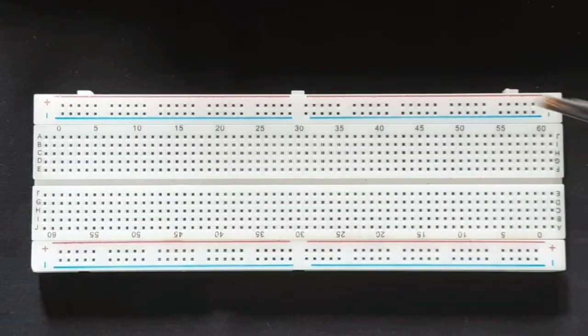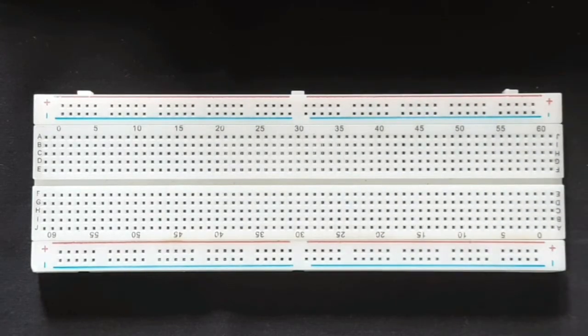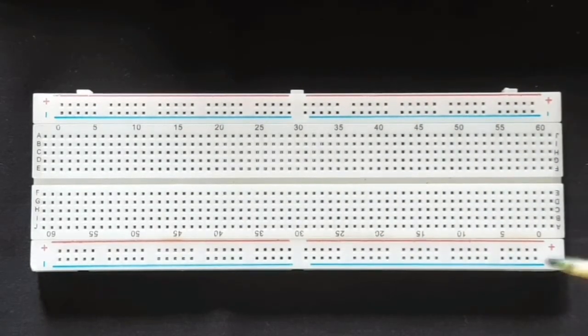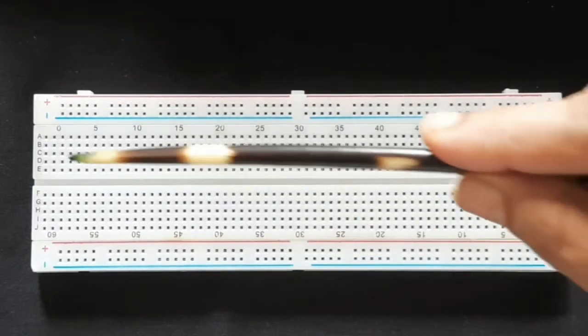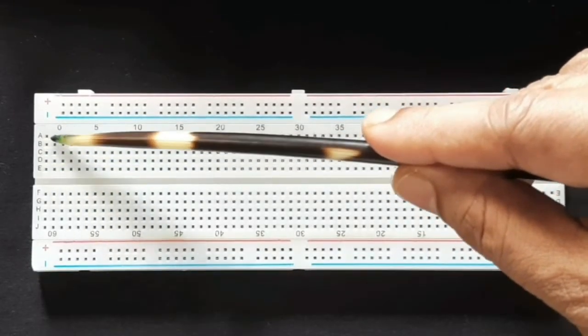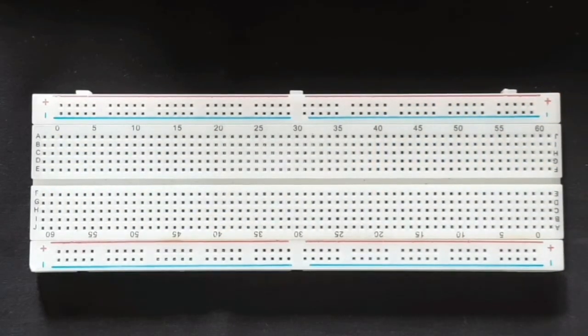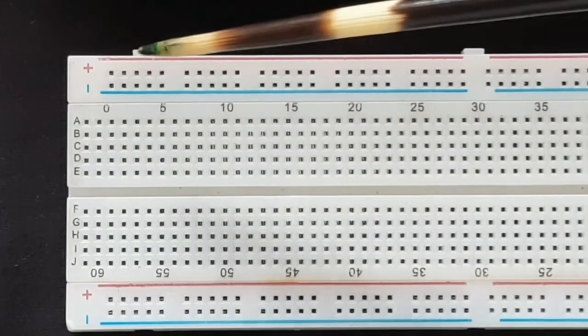A breadboard is a platform where you can do your connections very quickly and comfortably. Actually all these points a, b, c, d, e - these five points correspond to one single point of connection.